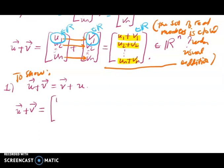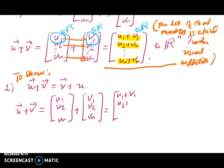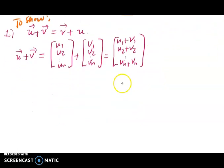Okay? So u plus v is equal to... Ulitin lang natin ito, no? So u1, u2, 2, un plus v1, v2, 2, vn. Okay? So add natin... U1 plus v1... Actually, same lang sya sa taas. U2 plus v2 up to u1 plus vn.